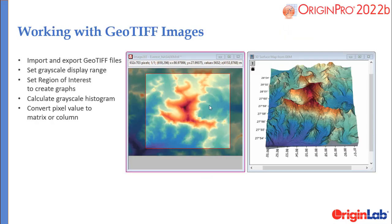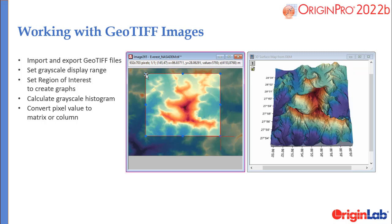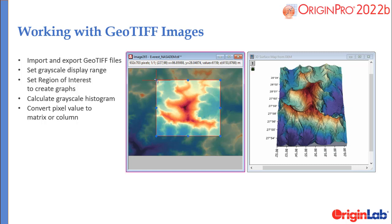Origin can now import and work with GeoTIFF files. You can set the grayscale range, add a region of interest, and extract a sub-range to perform analyses and generate graphs. Image histogram and conversion to matrix or column are also supported.